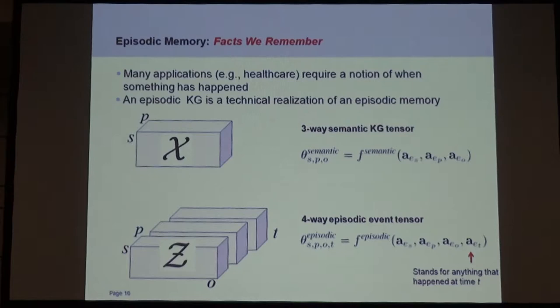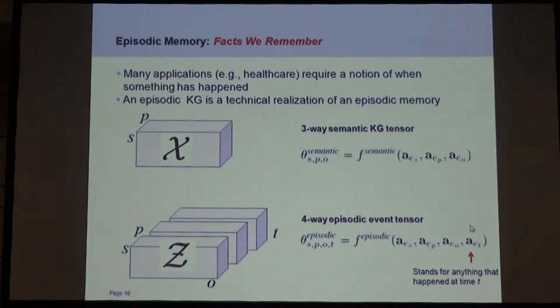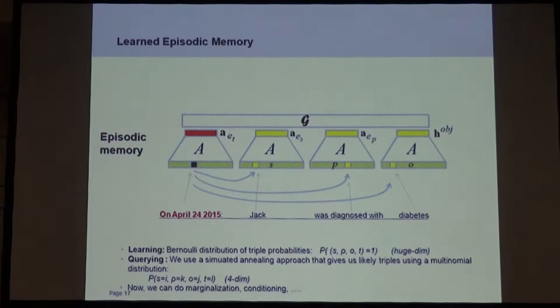What is an episodic memory? It's a fact to remember, like what you had for dinner yesterday. You need the notion of when something happened — for example in healthcare, what was recently done to a patient. So we simply use a four-way episodic event tensor instead of a three-way semantic tensor. We add one more index for the time and one more latent representation which stands for anything that happened at that instant in time. Time should be coarse — like a visit of a patient to a clinic would be one time step, one episode.